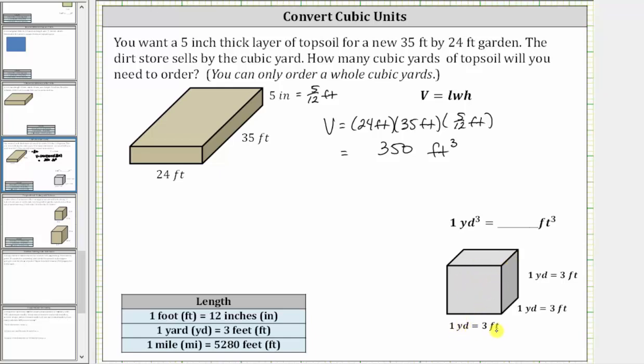Since one yard is equal to three feet, we can also label the dimensions three feet by three feet by three feet. Therefore in cubic feet, the volume is three feet times three feet times three feet, which gives us 27 cubic feet. So now we know one cubic yard equals 27 cubic feet.